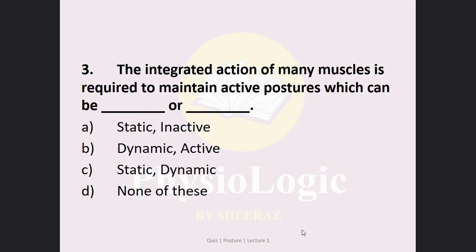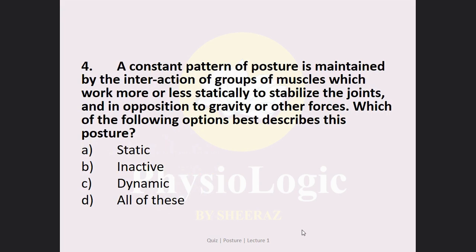MCQ number 3: The integrated action of many muscles is required to maintain active postures, which can be blank or blank. Options: A: static or inactive, B: dynamic or active, C: static or dynamic, D: none of these. The correct answer is Option C — static or dynamic.